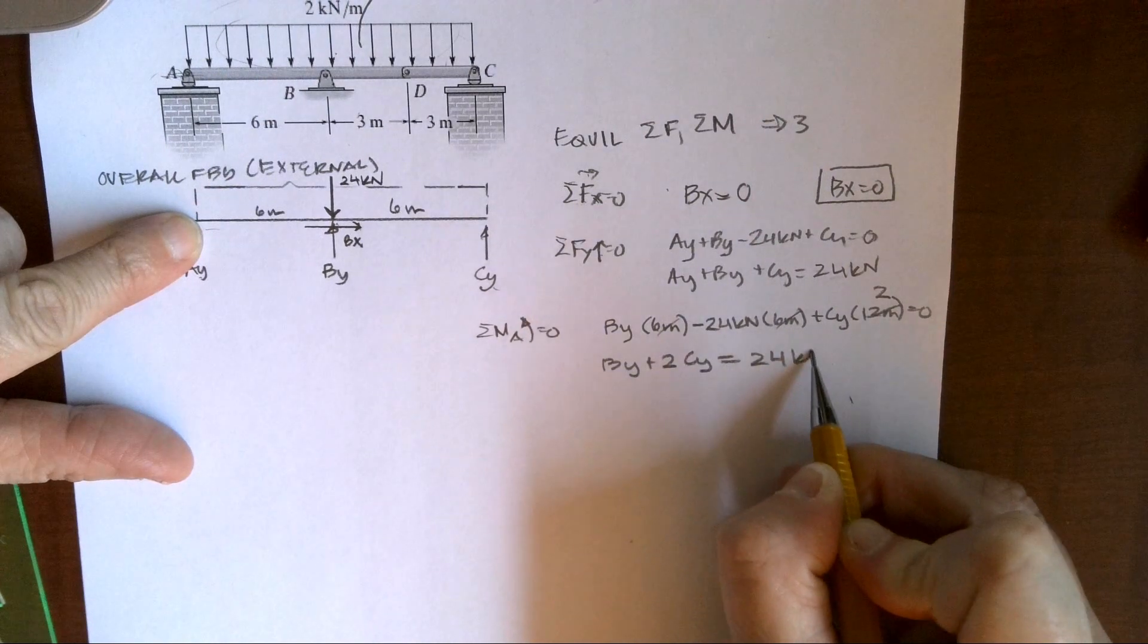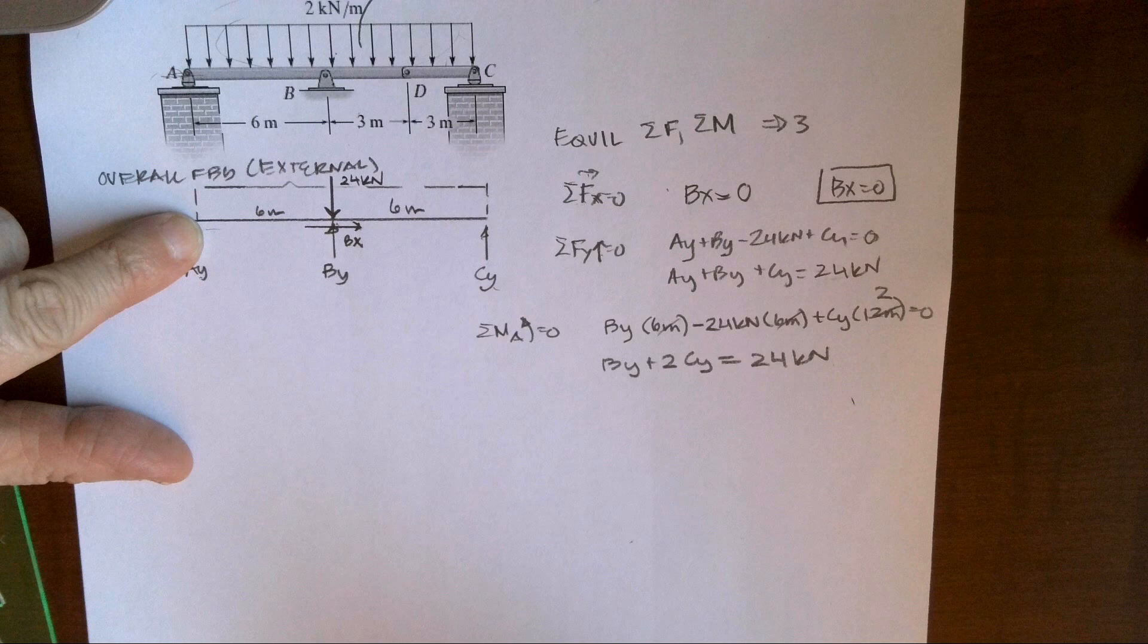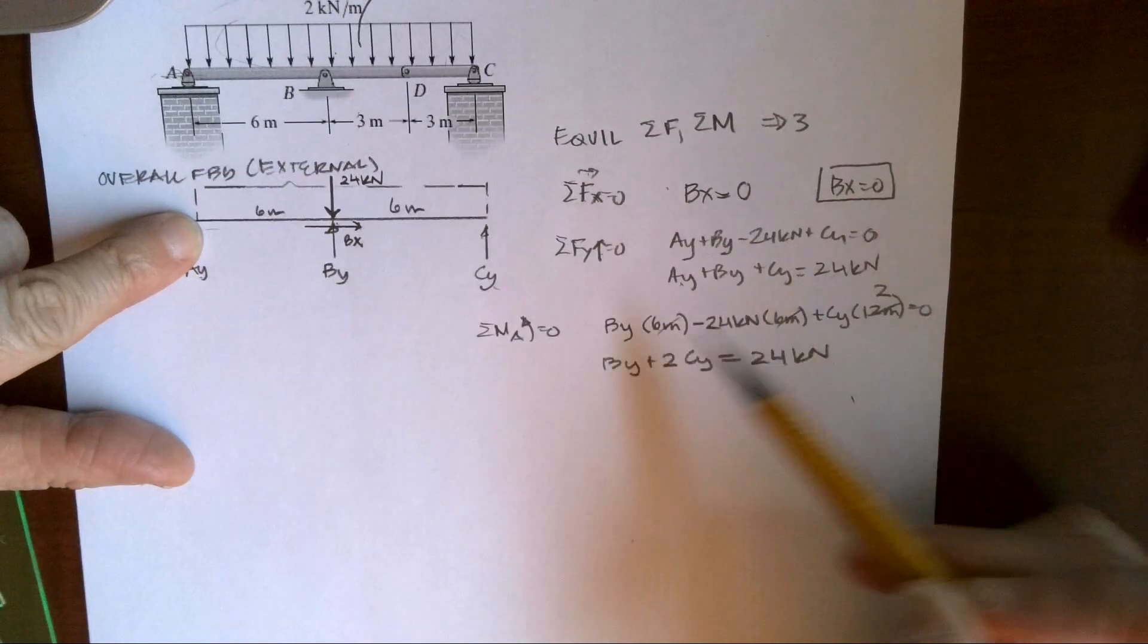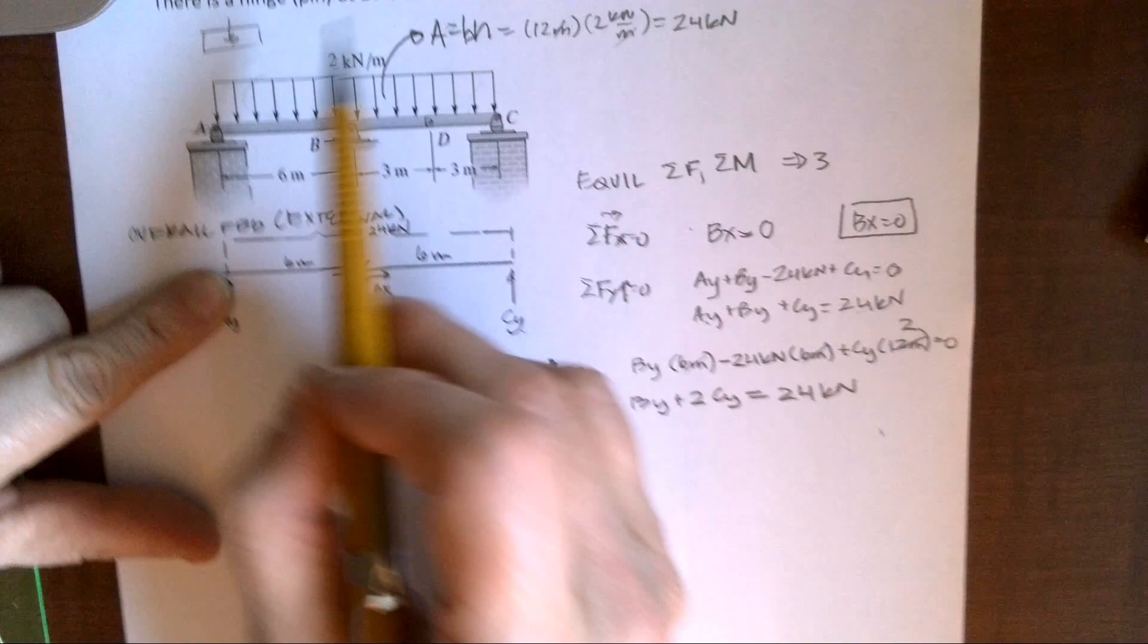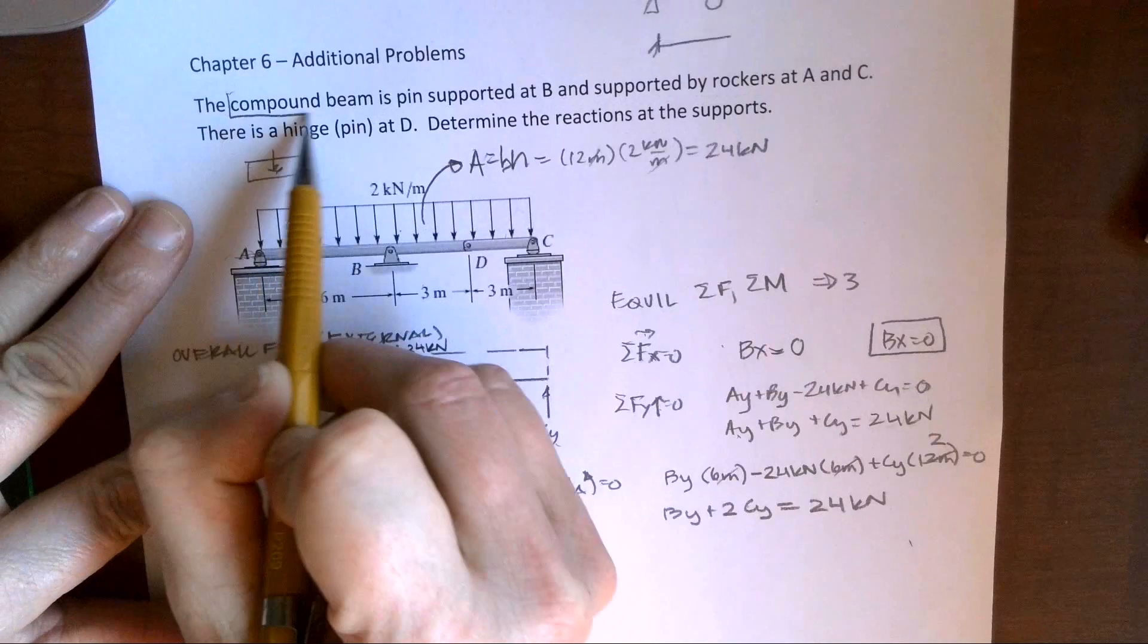And again, I have 1, 2, 3 unknowns. And I only have two equations. So this is where we can go now and look at compound beams and the second step of our problem.